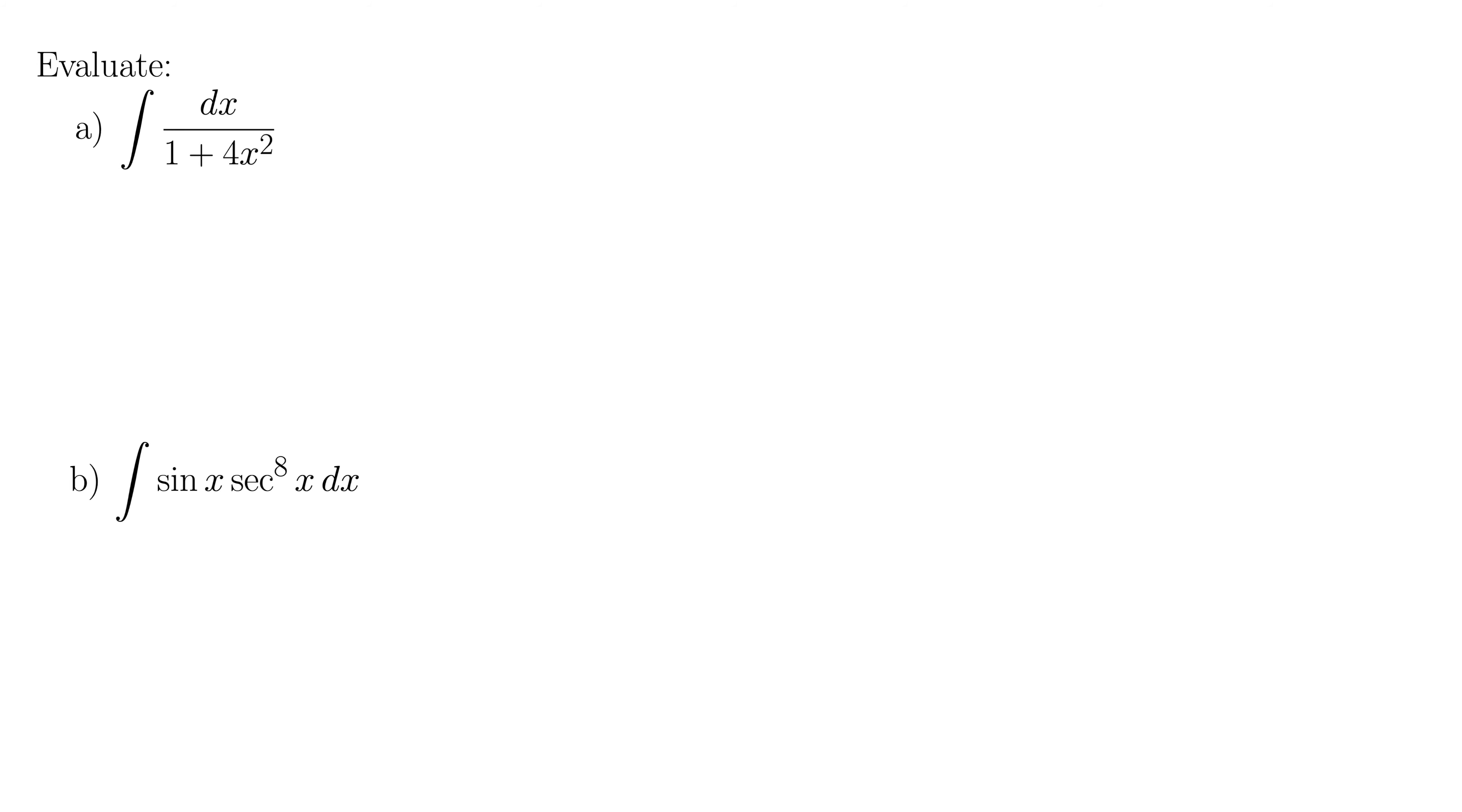So let's start with part A. We have the integral of dx over 1 plus 4x squared. So we're trying to spot a u somewhere in this such that the integral can be written essentially as f of u and then we have a u prime somewhere outside of the function.